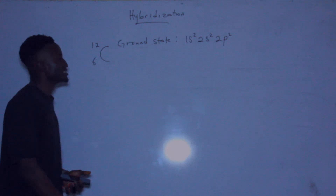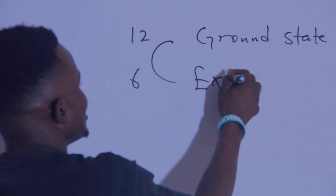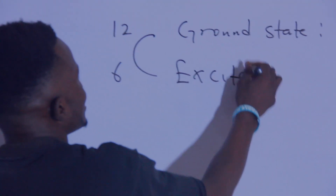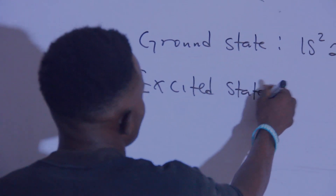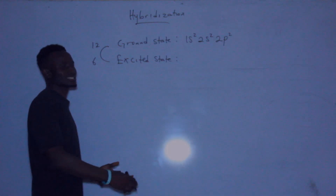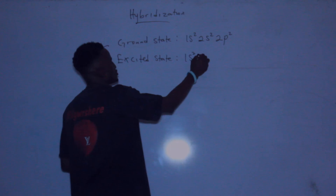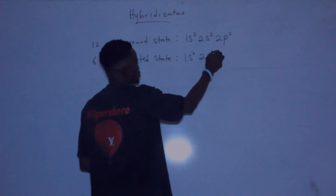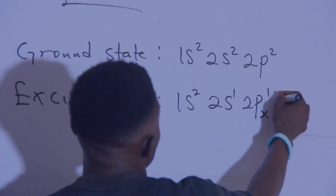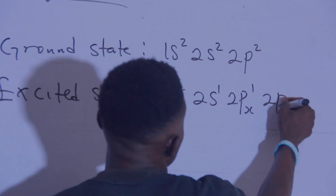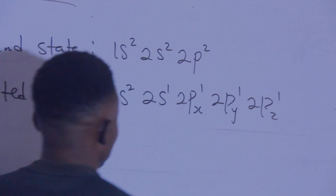Now let us consider the electronic configuration of carbon in its excited state. The electronic configuration of carbon in its excited state is 1s², 2s¹, 2px¹, 2py¹, 2pz¹.